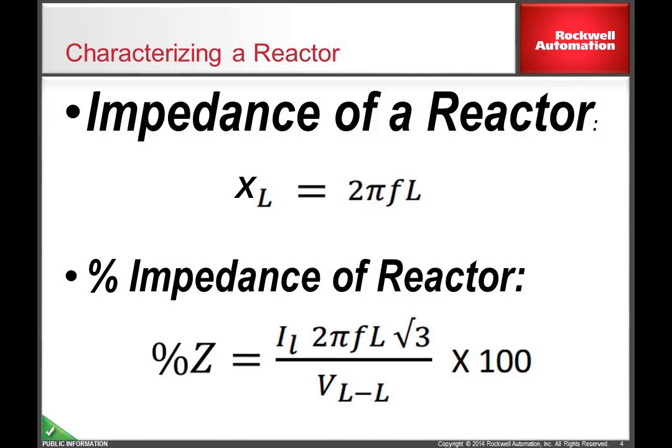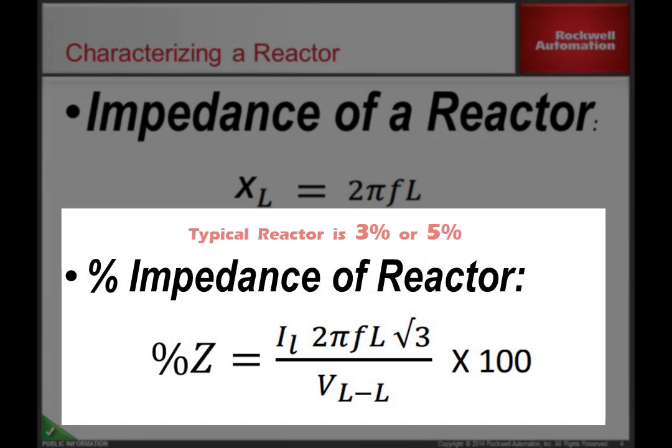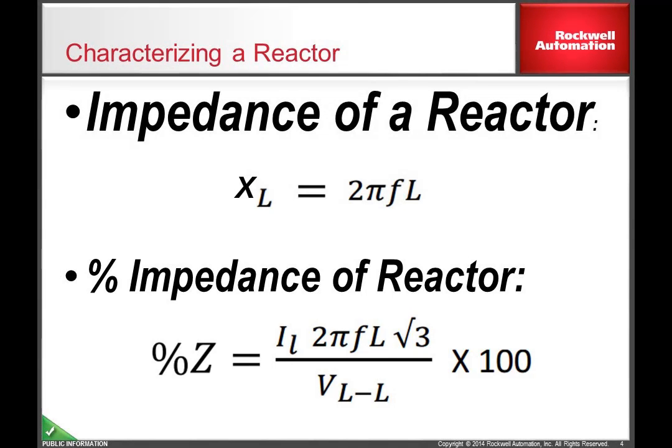Normally though, when selecting a reactor, the reactor will be offered as a percentage impedance, typically as a 3% or 5% reactor. This percentage represents the percentage of voltage drop across the reactor when the current flowing through the reactor is at the rated current of the reactor.